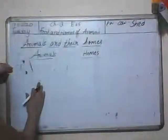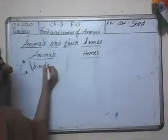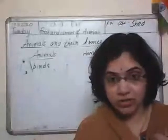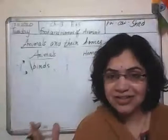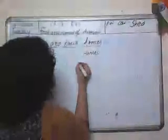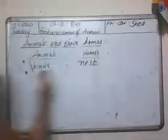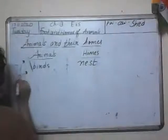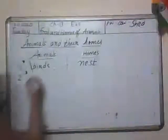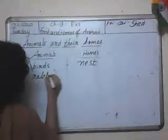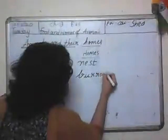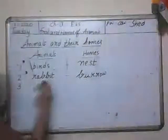First animal: let's take birds — B-I-R-D-S. Children, birds live in — what is the home of a bird called? Nest — N-E-S-T. Birds live in a nest. After this, rabbit — R-A-B-B-I-T. Rabbit lives in a burrow — B-U-R-R-O-W.